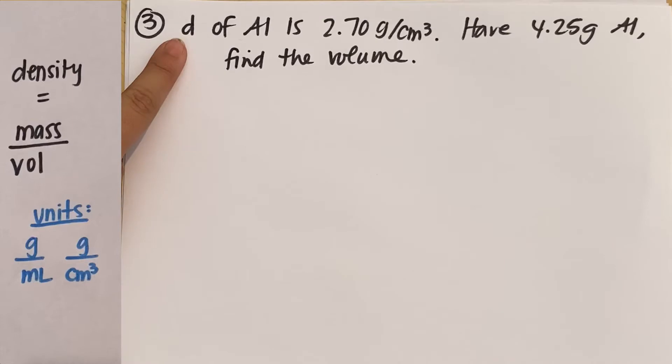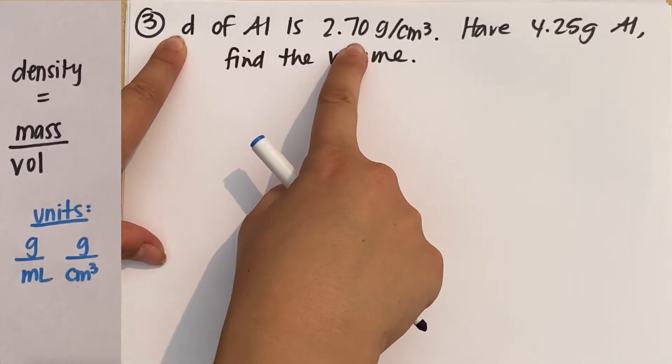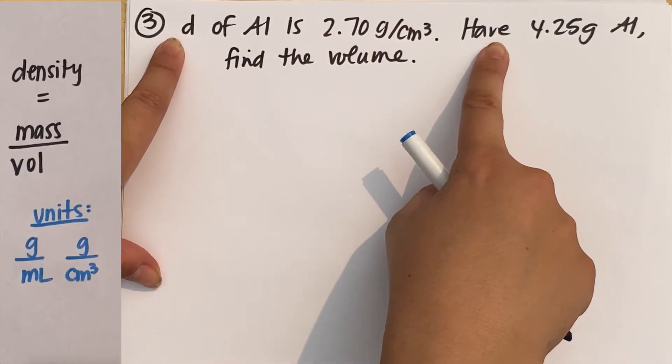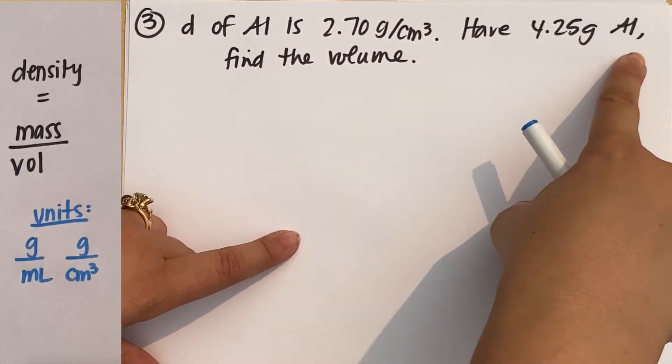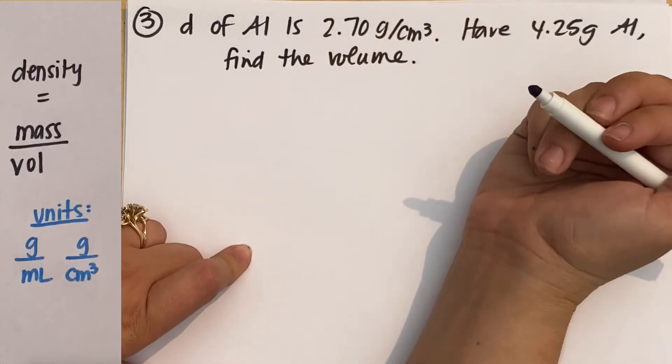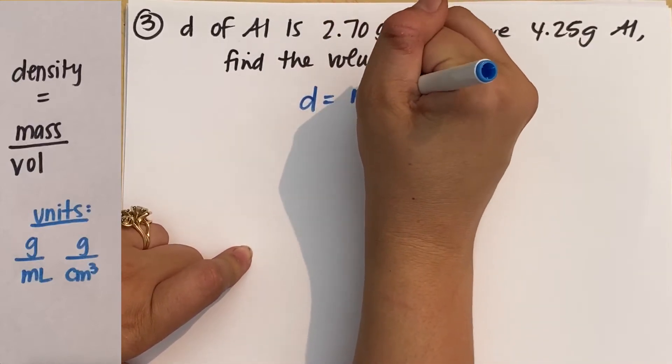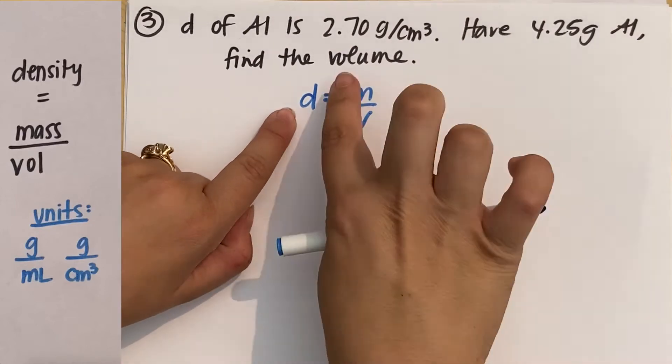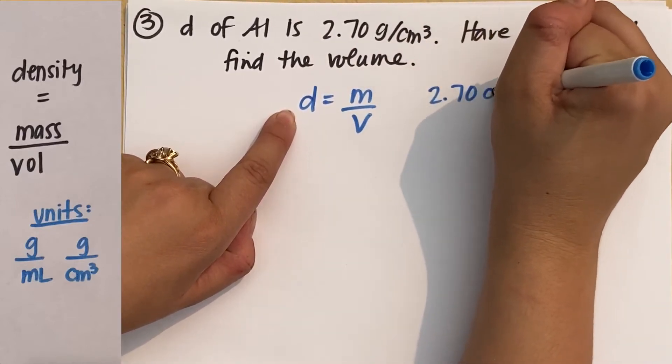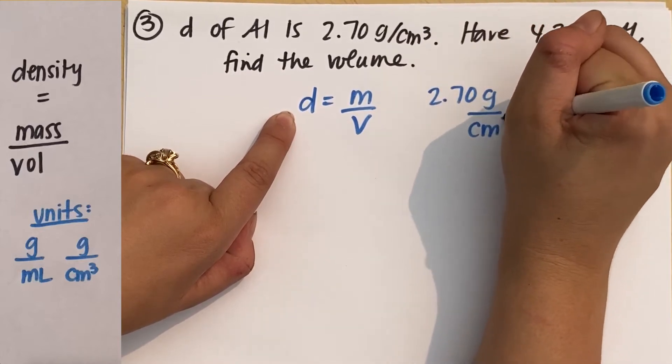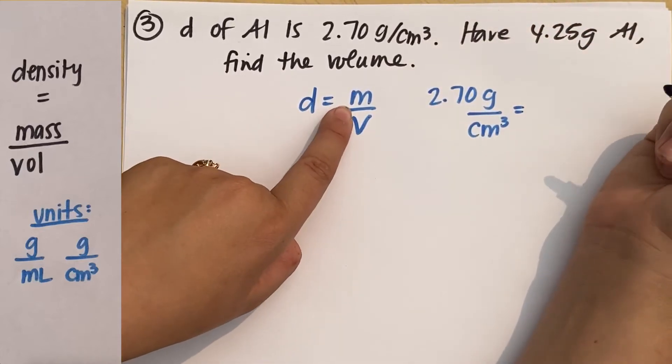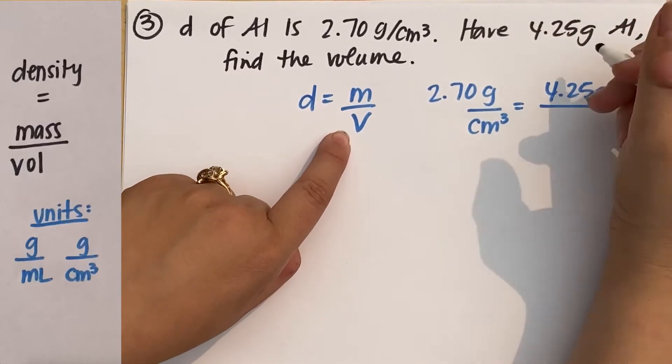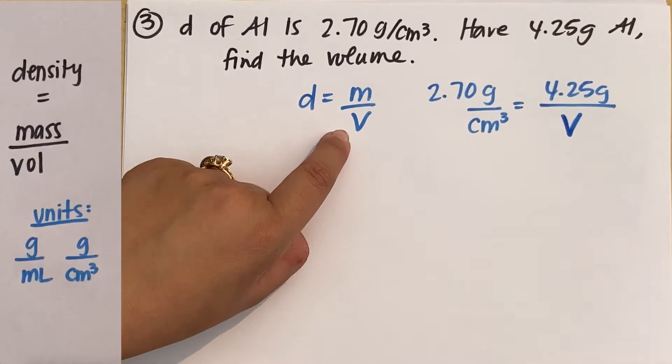So a hard question. The density of aluminum is 2.70 grams per centimeter cubed. So you're given density. And it says you have 4.25 grams of aluminum block. Find the volume. First things first, density equals mass divided by volume and plug in what you know. So my density, 2.70 grams per centimeter cubed equals my mass right here, 4.25 grams divided by my volume is my unknown.